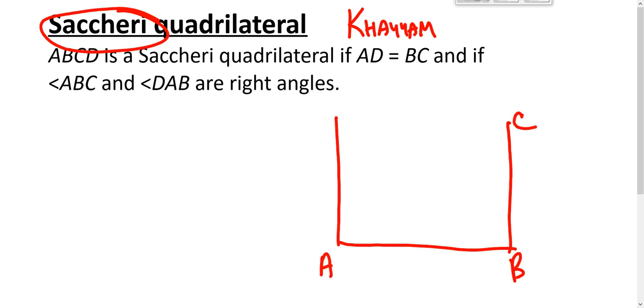where angle ABC is a right angle, angle DAB is a right angle, and AD is congruent to BC. We usually draw it like this to avoid making it look too much like a rectangle.